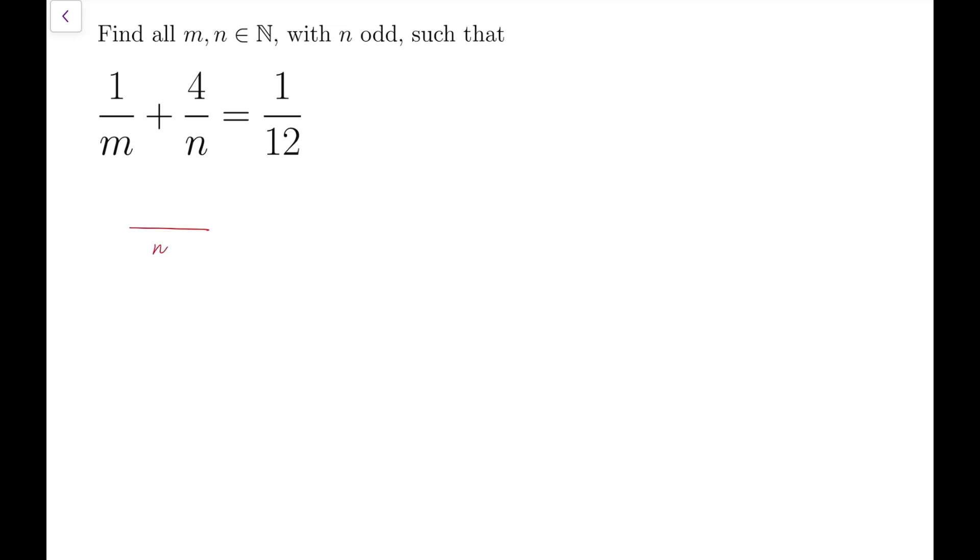So the denominator becomes mn and the numerator is then n plus 4m. Now I'm going to multiply 12 on both sides and also mn, which means to put the denominators to the other side.